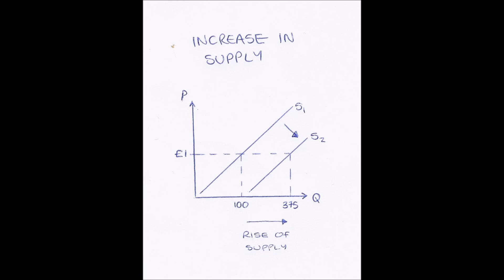However, if any of the non-price factors cause an increase in demand, our curve shifts to the right. For example, if the income of the population rose, people would have more money to spend and would buy more goods, so demand will increase. And if demand increases, our curve shifts to the right, shown here from D1 to D2.